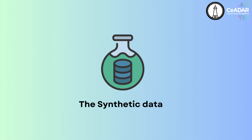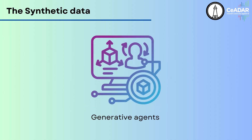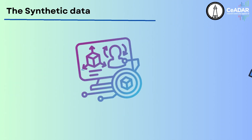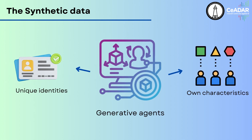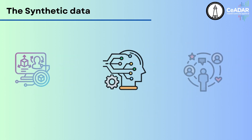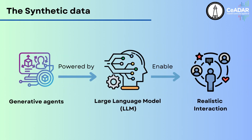So how do we simulate human behaviors to generate synthetic data? One answer is the simulation of generative agents with large language models. The process begins with the creation of generative agents — AI characters, each with its own unique identity and characteristics. They live in a virtual environment and have their own routines, interactions, and decisions, all powered by large language models. These agents can simulate complex human behaviors, providing a rich source of synthetic data.